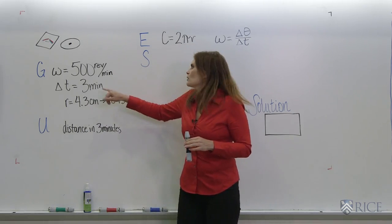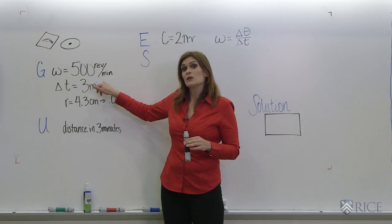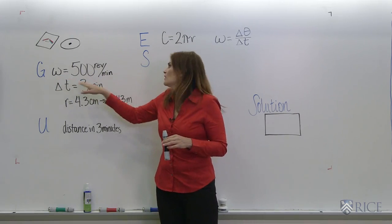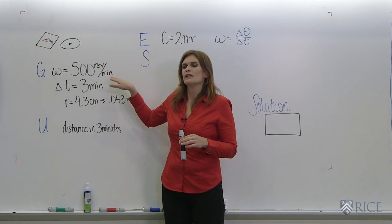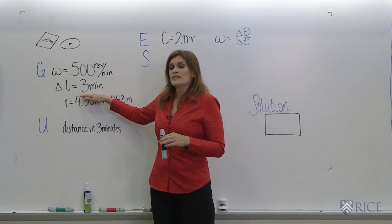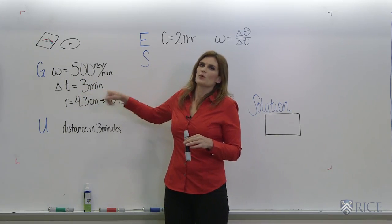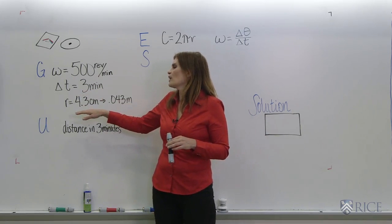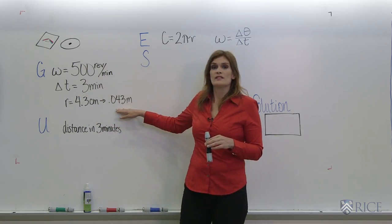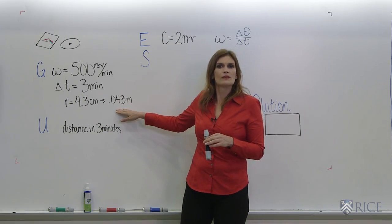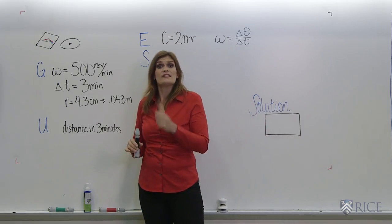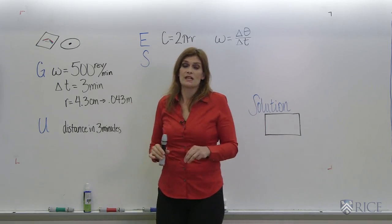So here are Givens. We write our units on these Givens because these aren't your standard units. Standard units of angular velocity are radians per second, but we're going to leave this like this, and you'll figure out why in a minute. We've got our time. It's not in seconds, but we're going to leave it in minutes, and we've got our radius. Our r is our distance from the center, which is, we're going to put that in meters, 0.043 meters. It's 4.3 centimeters. The question asks us to find the distance traveled by the dust in three minutes.